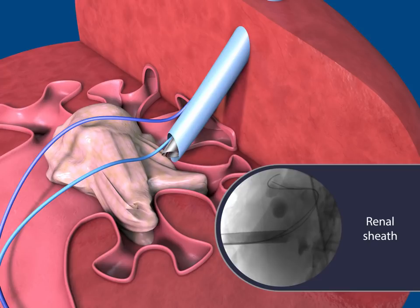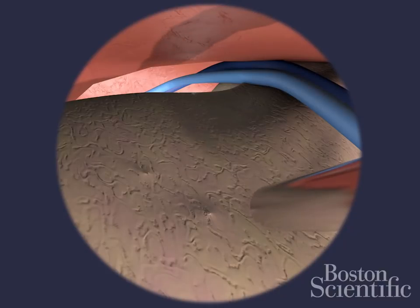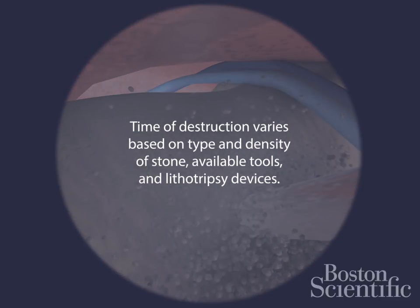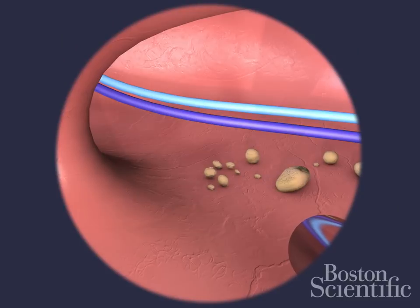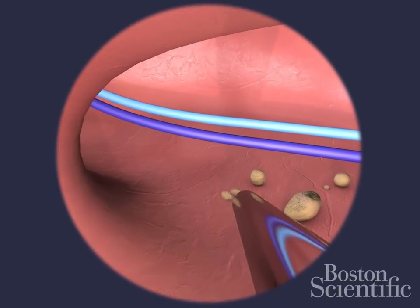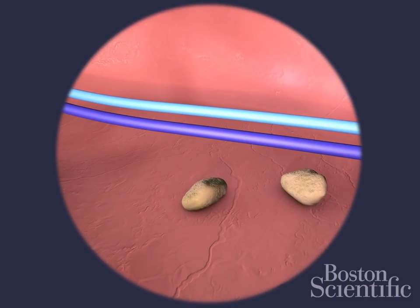Insert the nephroscope into the sheath. Guide the pneumatic and ultrasonic lithotriptor through the working channel of the nephroscope. Perform lithotripsy to break up the stone. The time of destruction varies based on the type and density of stone, available tools and lithotripsy devices. Irrigate and remove smaller stones using the lithotripsy probe. Remove the lithotripsy probe.